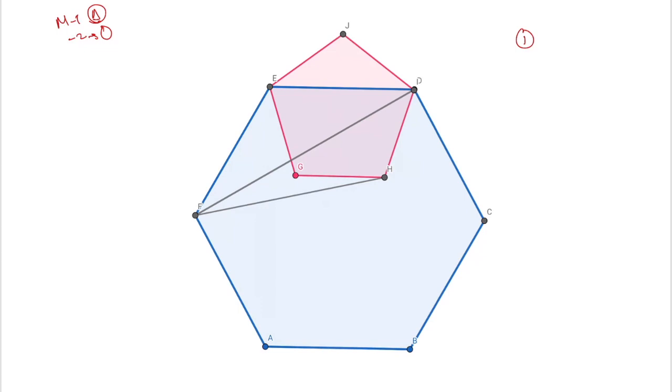First of all, I always tell you, whenever you have a regular figure, draw all lines equal. Pentagon all lines are equal, in the hexagon all lines are equal.